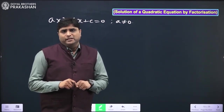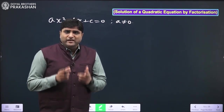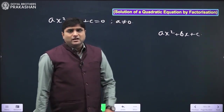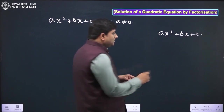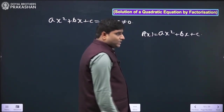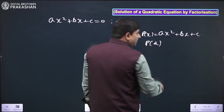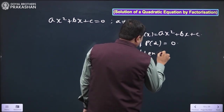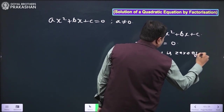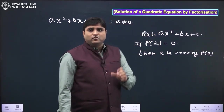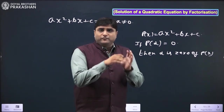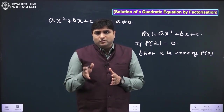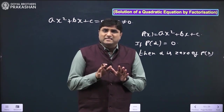The solution of this quadratic equation means the value of x which satisfies the equation. Just as we studied in polynomials, ax² + bx + c is a quadratic polynomial, and if p(α) = 0 then α is a zero of p(x). So zero of a polynomial and solution of a quadratic equation — also called the root of the quadratic equation — are the same thing.